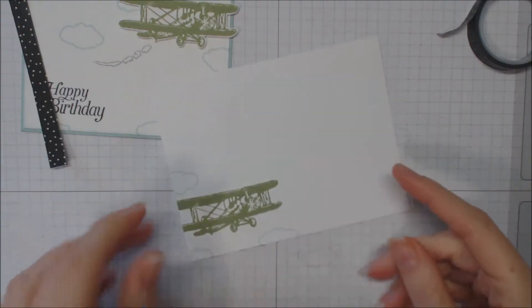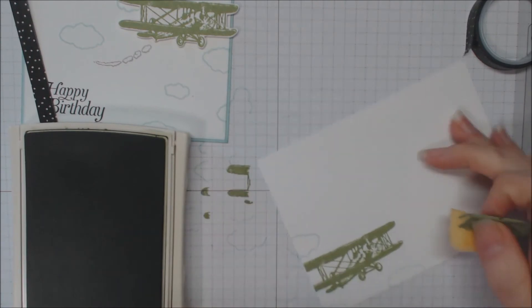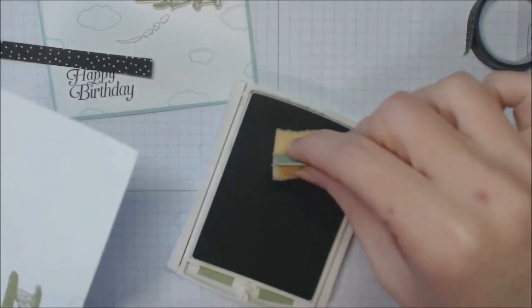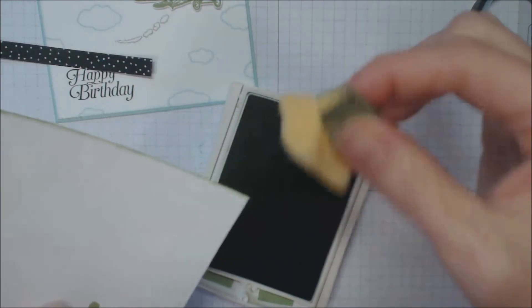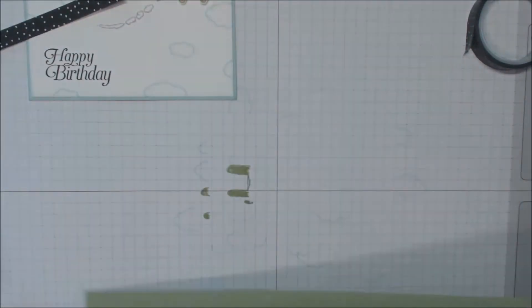And we'll bring in our inside panel. And I want to sponge that with some wild wasabi ink. I've got my Stampin' Sponge. Just going to go along the edges of that. Bring in our wild wasabi card base.